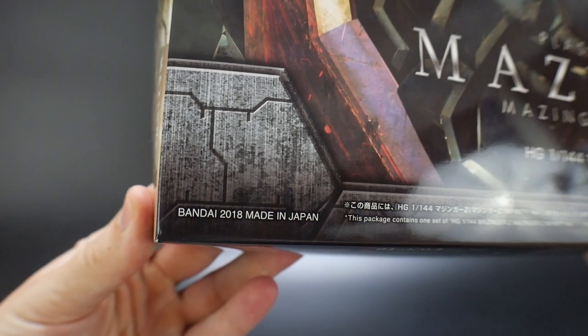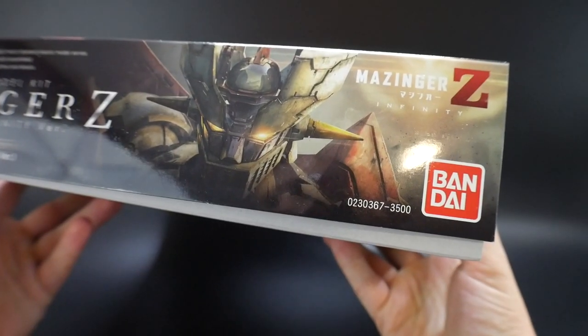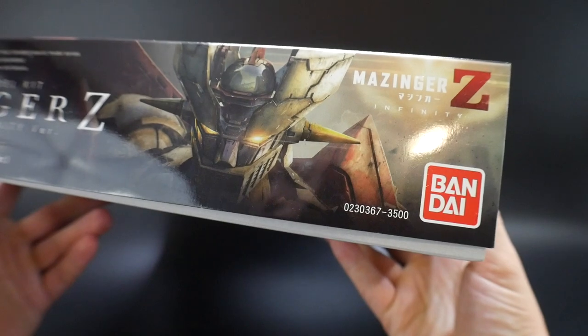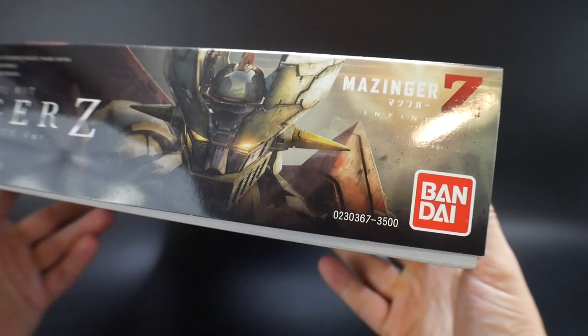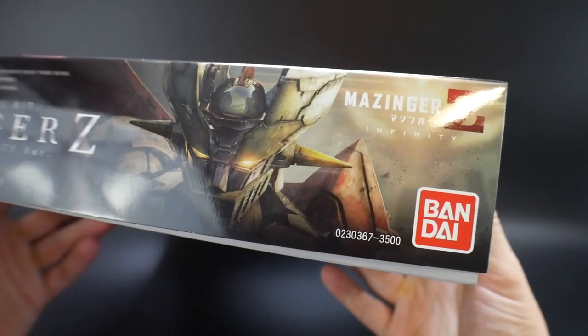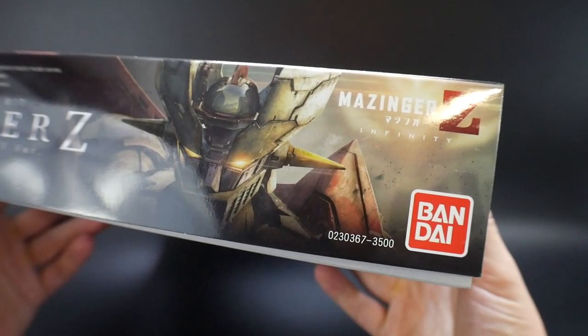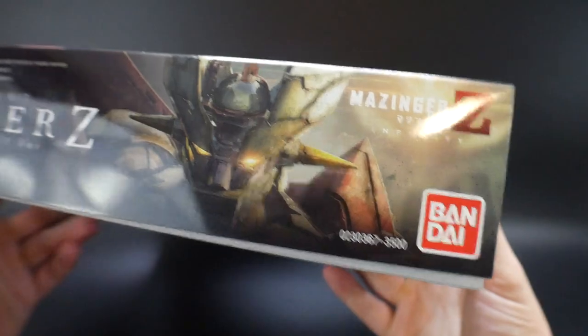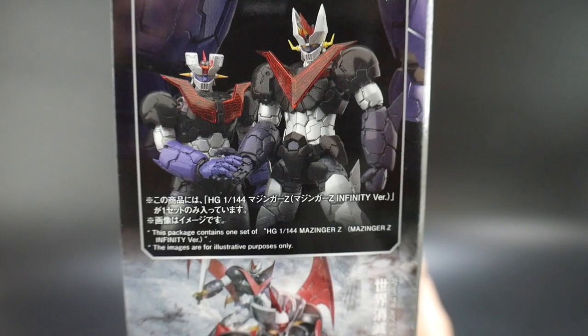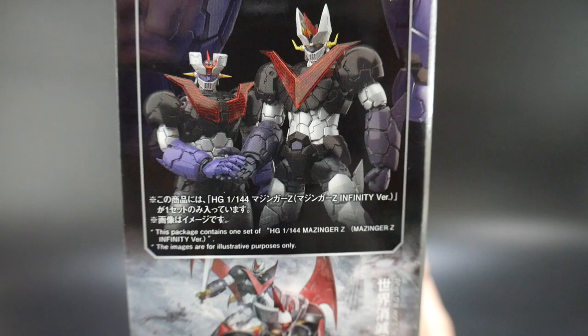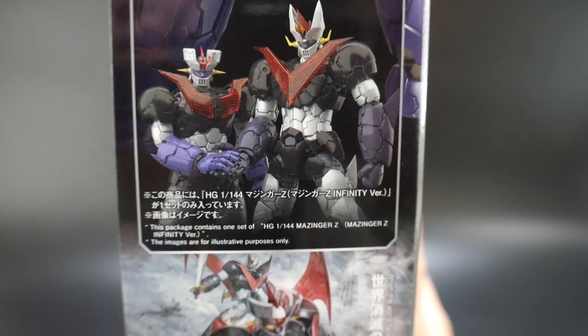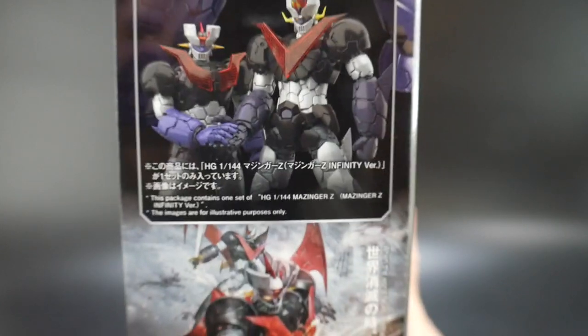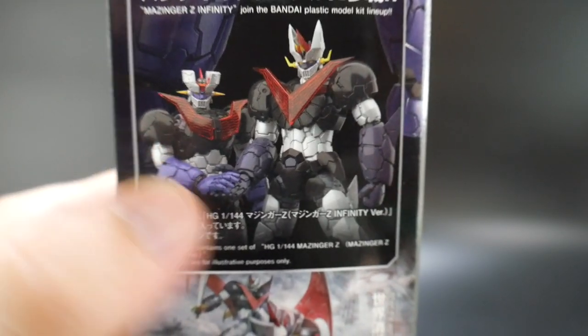So this kit was released in 2018, and it retails for about 3500 yen, which is pretty expensive for a high grade, like an average high grade. But this might be a very detailed high grade and a very large scale high grade, so that price might be warranted. And you get a pretty cool looking picture right there. Right here you do see there's two different Mazingers, there's the normal one, and then I guess the Infinity version. So we have the Infinity version, which is right here on the side.